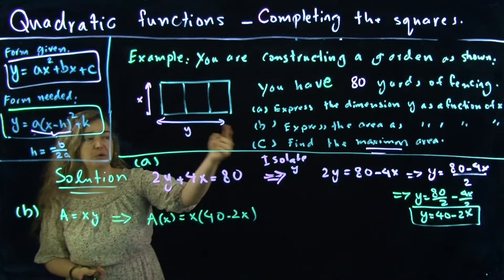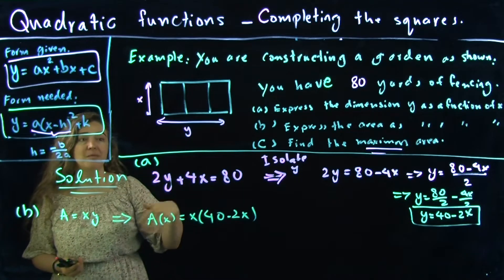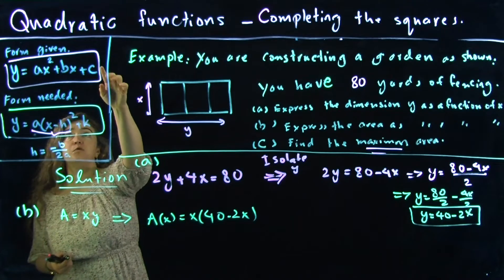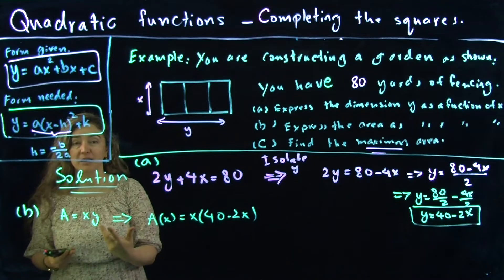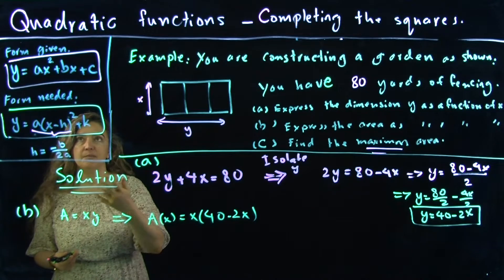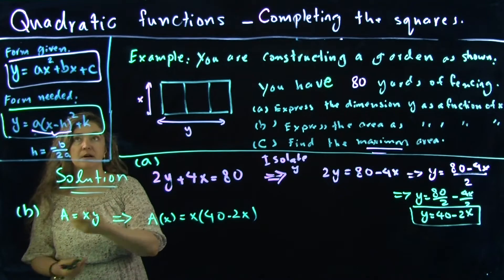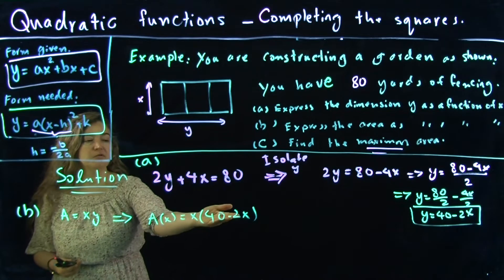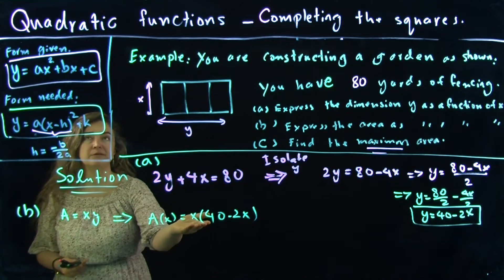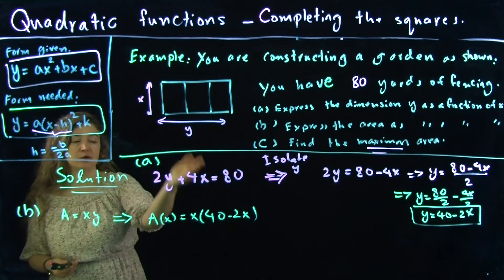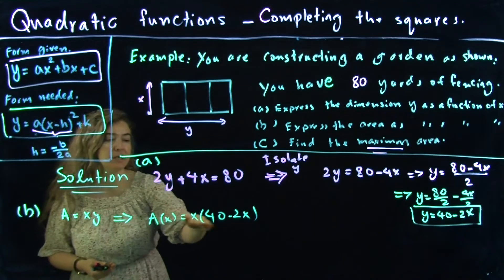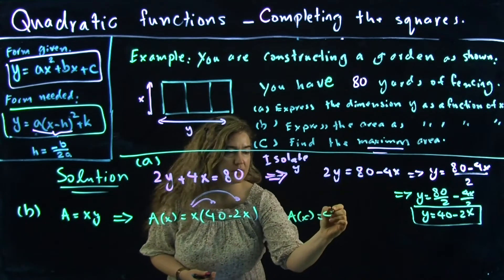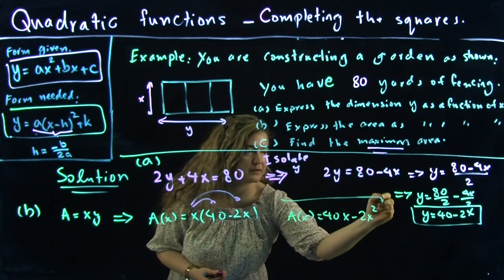Since we're trying to optimize this problem, we want to distribute x in. In precalculus, functions we can optimize include quadratics, trig functions, and piecewise defined functions. This should look like a quadratic in standard form, so we distribute to get A(x) equals 40x minus 2x squared. That's Part B.